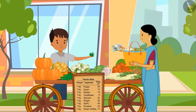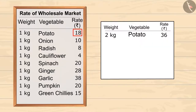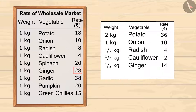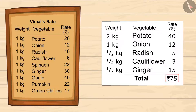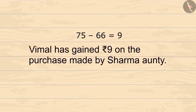Can you guess how much profit Vimal has gained? Let's calculate this together. This is the price of the wholesale market. According to this, Sharma auntie should give 36 rupees for 2 kg potatoes, 10 rupees for 1 kg onion, 4 rupees for half a kg radish, 2 rupees for half a kg cauliflower, and 14 rupees for half a kg ginger. So the total is 66 rupees. But according to the pricing set by Vimal, Sharma auntie had to give 75 rupees. On subtracting 66 from 75 gives 9. So Vimal has gained 9 rupees on the purchase made by Sharma auntie.